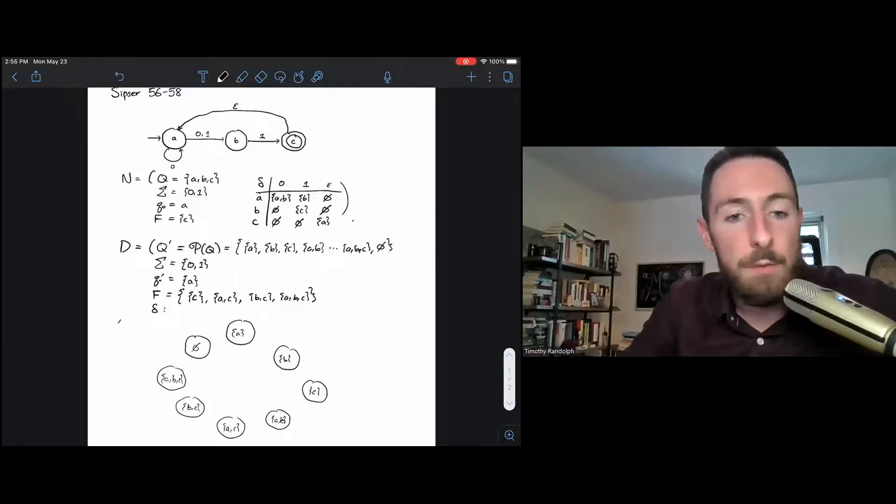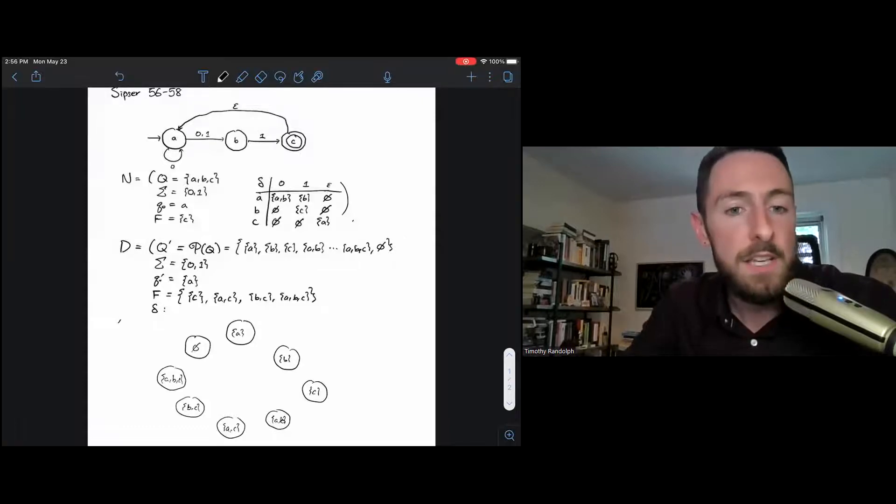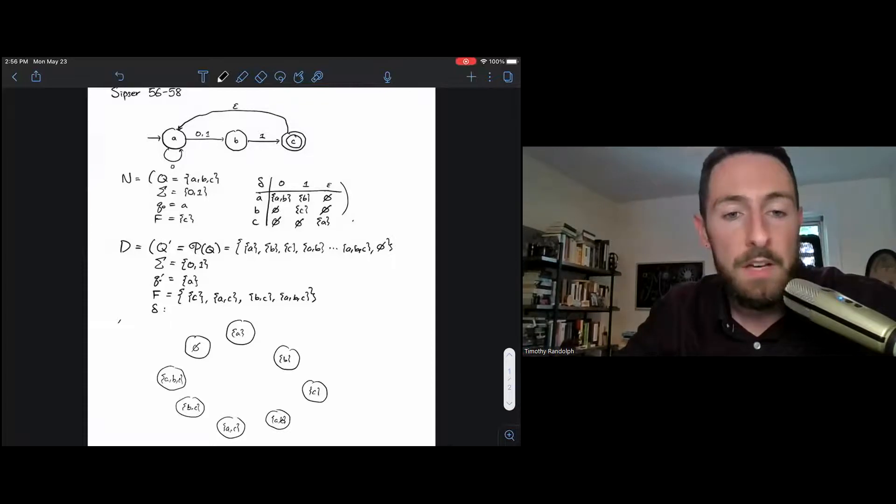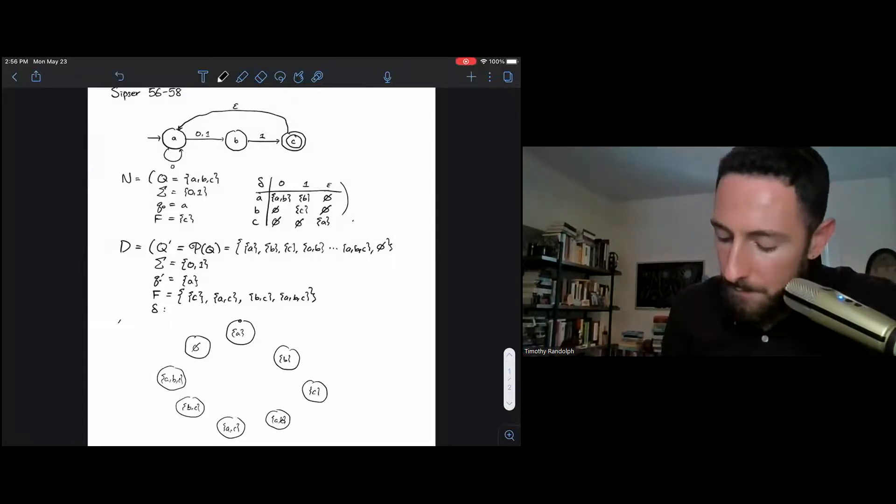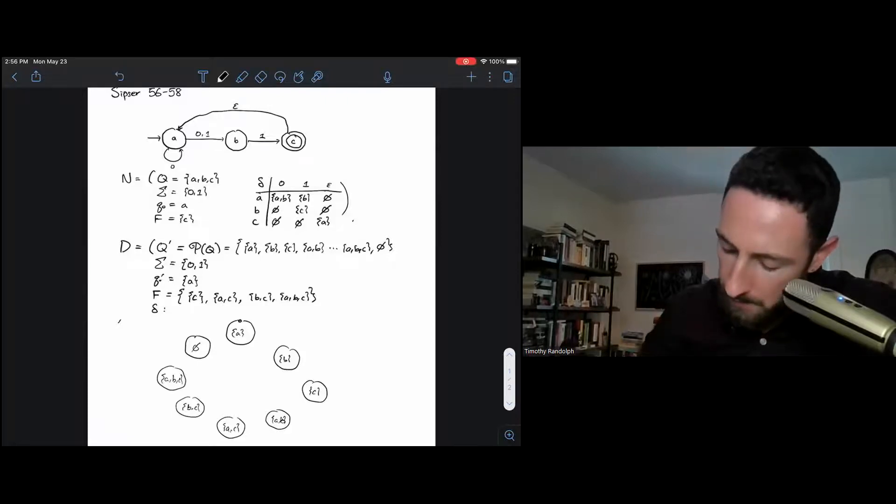So how are we going to fill out our transitions? Well, all we have to do is look at these states in turn and say, if I were the NFA and I were occupying exactly these states, where would I go next? For example, let's start with the state set A at the top here. If I'm occupying only the state A in my NFA and I read in a zero, what happens? Well, I can read this right off my transition function. I'll go to A and I'll go to B. So in my new DFA, I'll go to the state A, B on a zero.